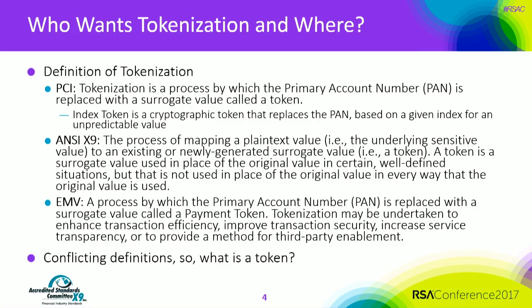So to begin with, what is tokenization? We have some definitions here from different people. The first one is from PCI — the payment card industry. Because PCI deals with cards, the key piece of information on the card is the account number. So this definition from PCI has a narrow scope because it's only talking about the PAN. Tokenization is a process by which the PAN, primary account number, is replaced with a surrogate value called a token. An index token is defined as a cryptographic token that replaces the PAN based on a given index for an unpredictable value — so two kinds of definitions, a sub-definition.